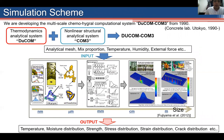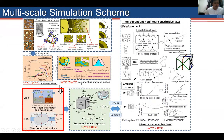These experimental results were simulated using the DUCOM-COM3 framework, developed in the concrete laboratory at the University of Tokyo since the 1990s. DUCOM-COM3 is composed of two subsystems: DUCOM, a thermodynamic analytical system for material calculation, and COM3, a nonlinear structural analytical system. A key feature is its multi-scale simulation scheme, in which both ASR and FTC phenomena are already modeled.